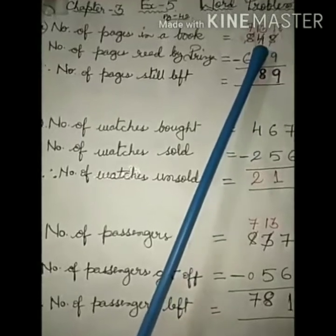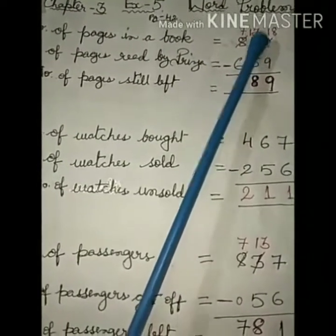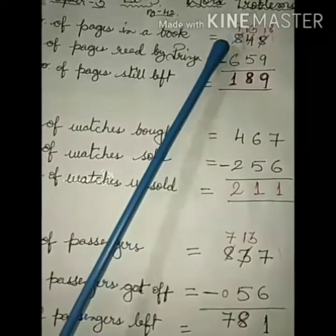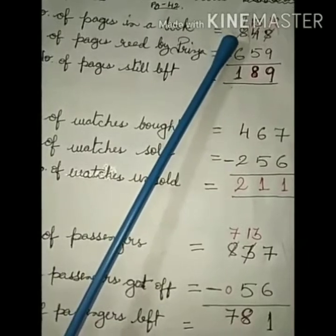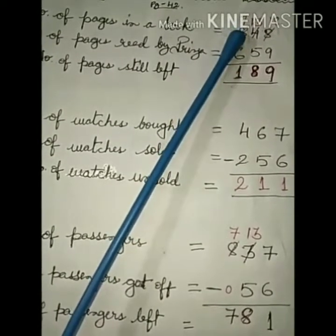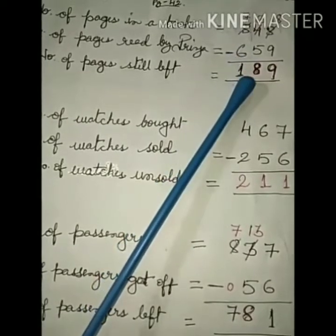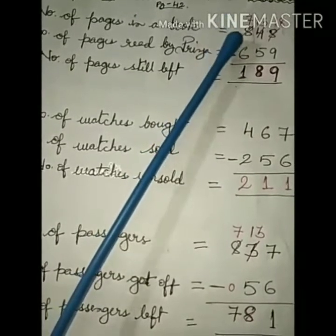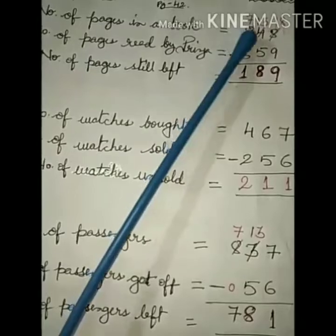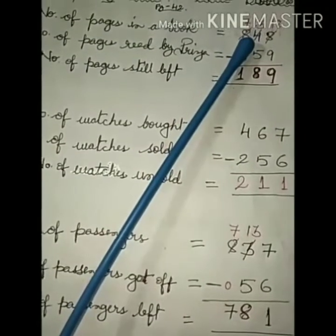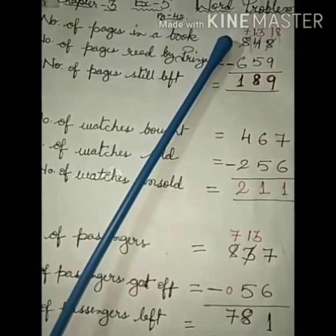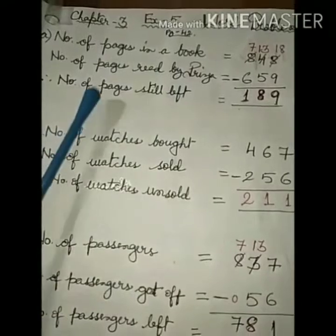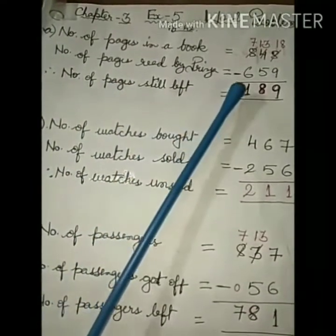This 4 will become 3. So 3 minus 5, you cannot subtract 5 from 3, so again you have to borrow 1 from 8 which is in the hundreds place. So this becomes 13. So 13 minus 5 is equal to 8. Here what is left? 7. Why? Because from 8, 1 was given to the tens place. So the answer is what? 7 minus 6 is equal to 1. So number of pages still left, answer is 189.